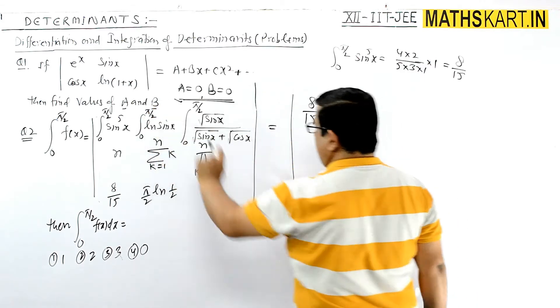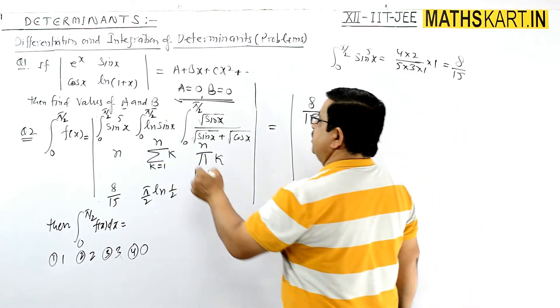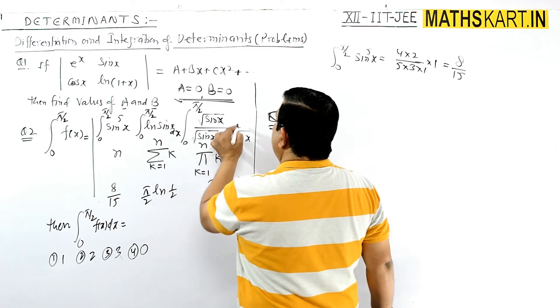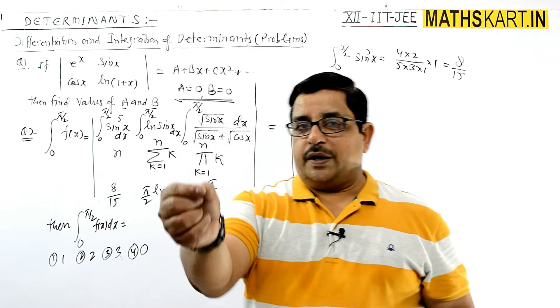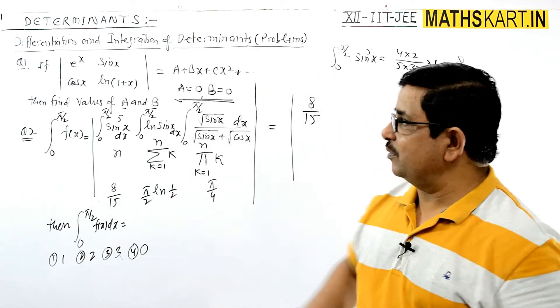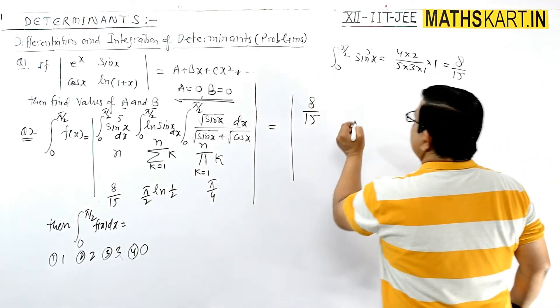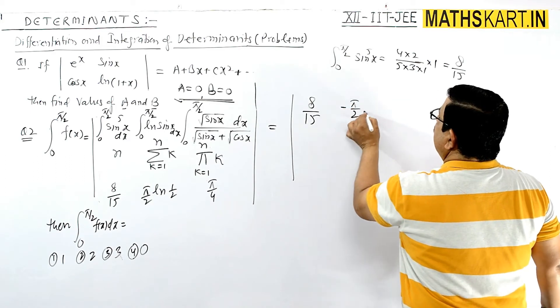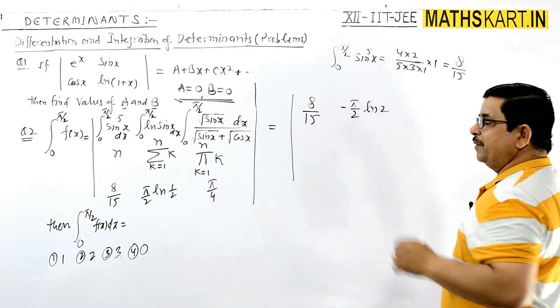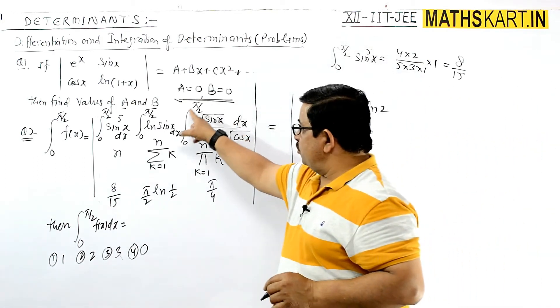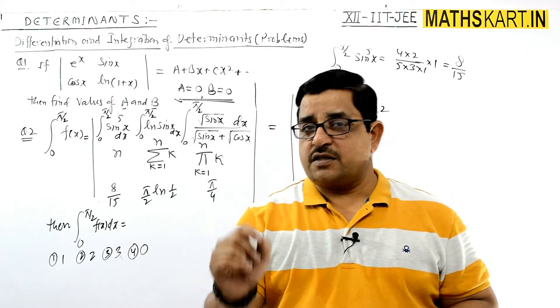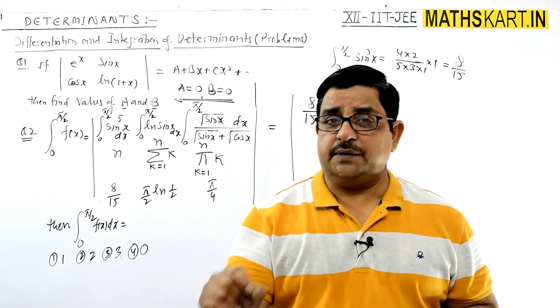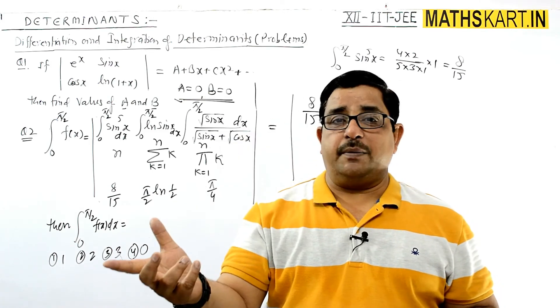Aur ln sin x kya value, ln sin x dx. 0 to pi by 2 ln sin x ka direct formula hai, so that formula is minus pi by 2 ln 2. Aur is ko bhi hum ne direct likha hua hai, that particular value is such a result definite integration mein. We have known it by definite integration mein use, and this is property plus pi by 4.